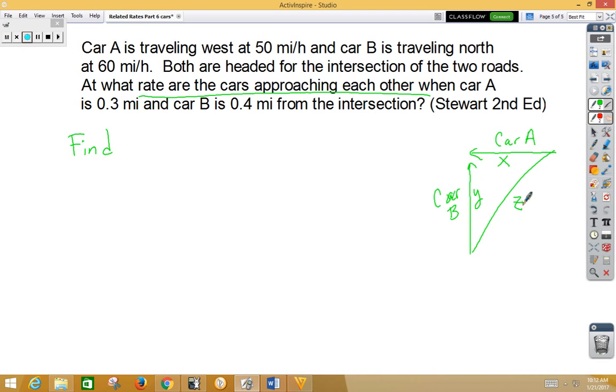Let's start with what we're trying to find, which is dz/dt at a particular moment. At that moment, they've given us car A, which is x, is at 0.3, and car B, which is y, is at 0.4.